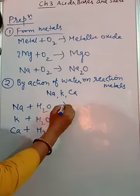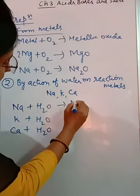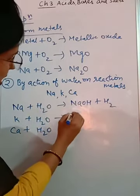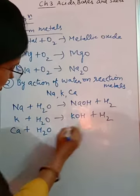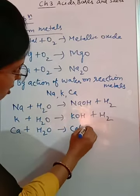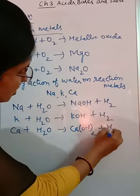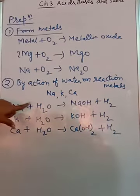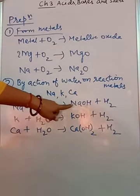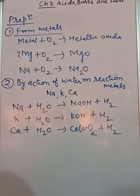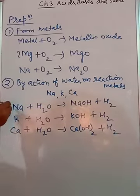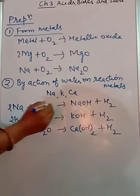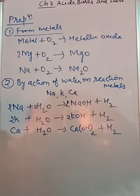2NaOH plus H2, 2KOH plus H2, Ca(OH)2 plus H2. So the typical reaction you can understand: active metal plus water gives base plus hydrogen gas. And the balancing part, as I told you please take care of the balancing part. So children now I think you have understood this reaction also.